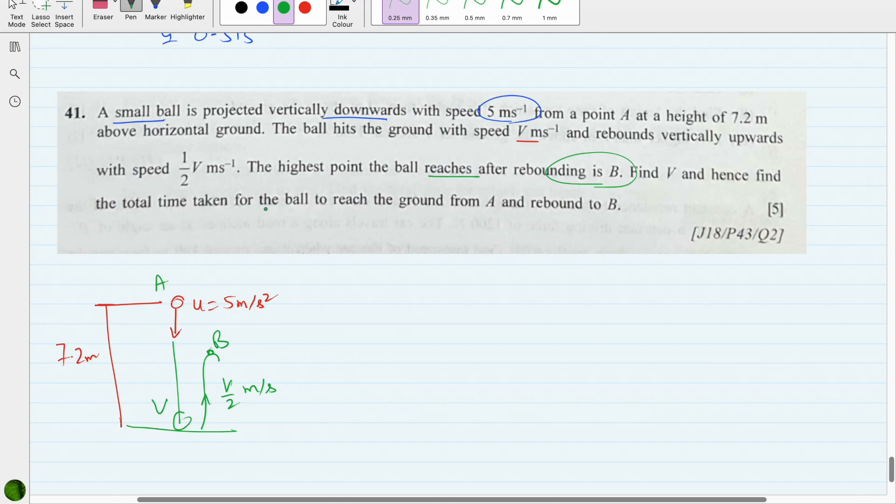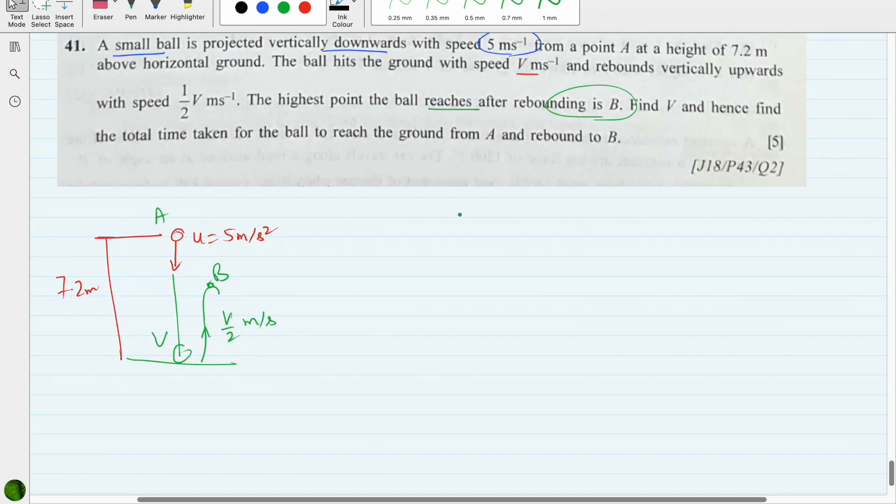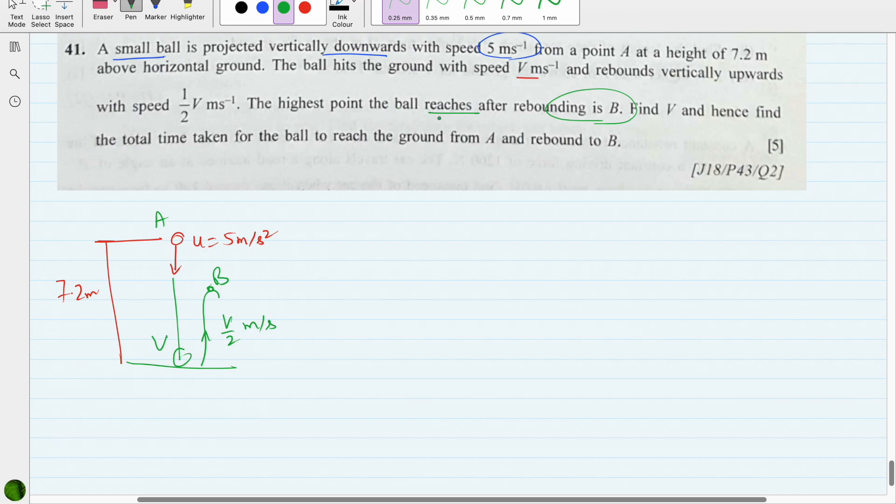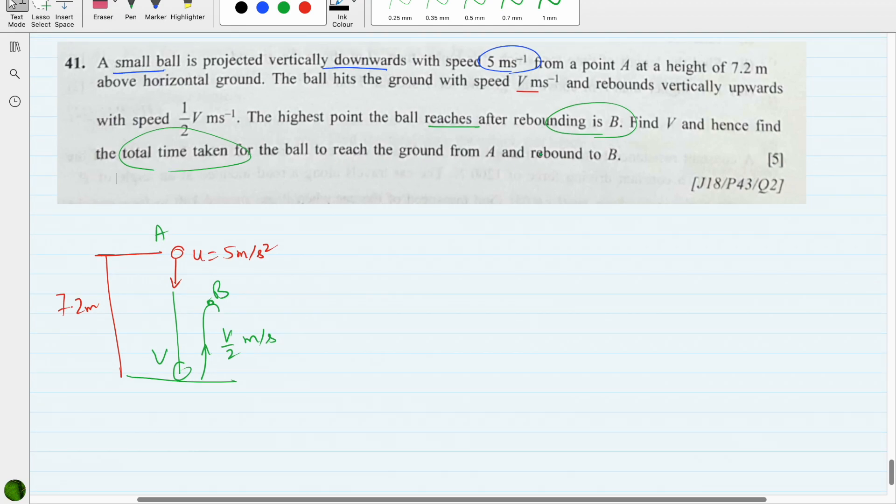Find v, and hence find the total time taken for the ball to reach the ground from A and rebound to B. So the first part: find the total time taken for the ball to reach the ground from A and to rebound.